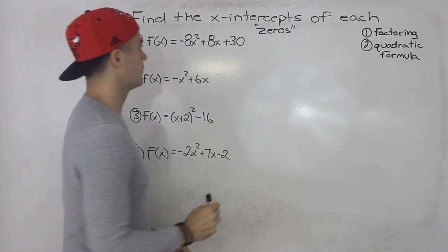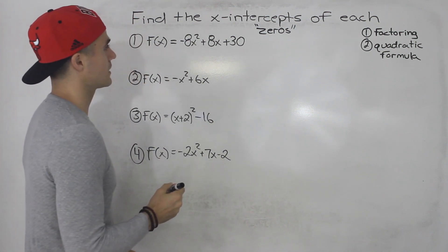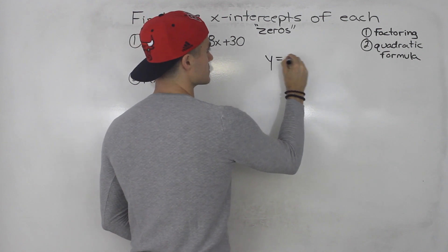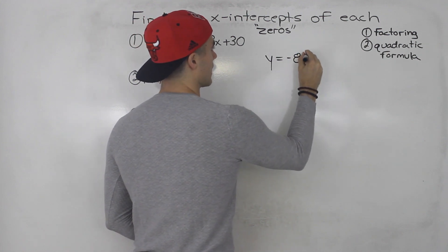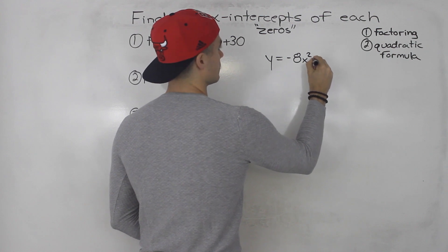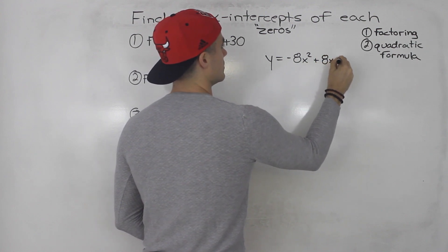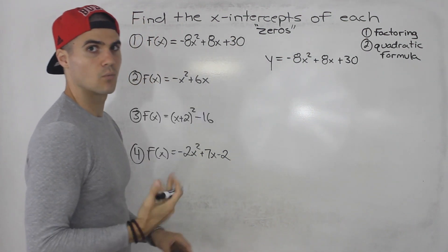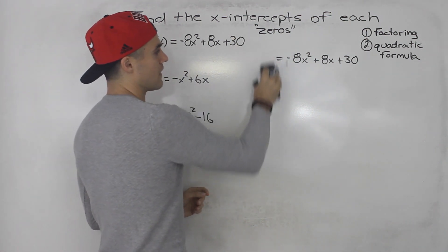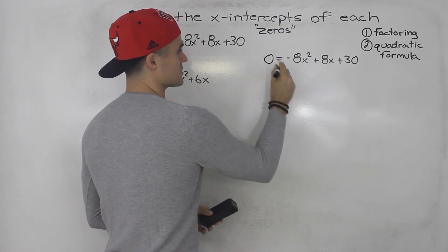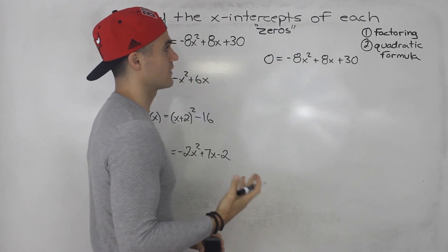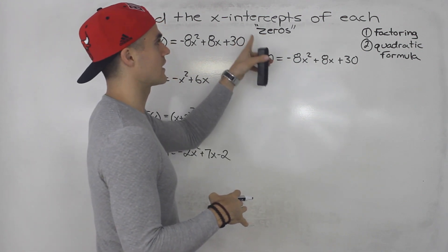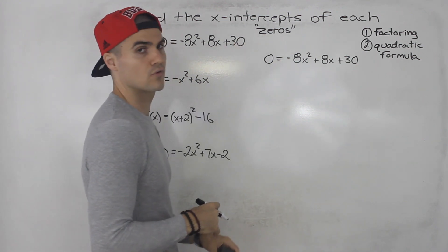Starting off with number one, we got f(x) equals negative 8x squared plus 8x plus 30. I'm going to rewrite that as y equals negative 8x squared plus 8x plus 30. When you're finding the x-intercepts, the y-value is zero. So this just becomes a quadratic equation to solve — that's why solving quadratic equations is the same as finding x-intercepts or zeros for that function.